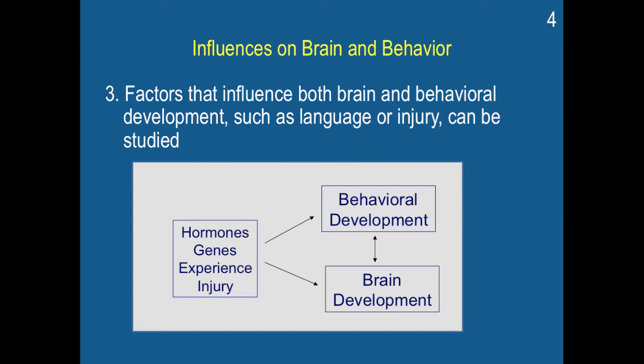There are a number of factors that influence the brain and behavior relationship. Hormones are going to turn on at particular times in development, and that will influence brain development and behavior. Genes are also set to turn on at certain times to influence growth, and that will influence the brain and behavior relationship. Experience has a huge role — if you are in a learning-conducive environment, you're going to see behaviors demonstrated at an earlier age. However, in an impoverished environment without access to stimulating experiences, brain development will be delayed. And of course, injury to the brain will also influence the brain development and behavior relationship.